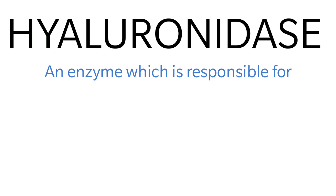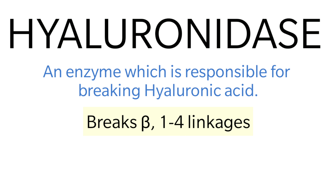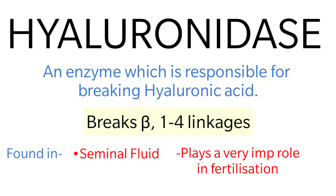Hyaluronidase is a very important enzyme responsible for breaking down hyaluronic acid. It is found in high concentration in seminal fluid. Since hyaluronic acid forms a gel around the ovum, hyaluronidase in seminal fluid helps the sperm to easily penetrate the ovum at the time of fertilization by breaking down this gel.